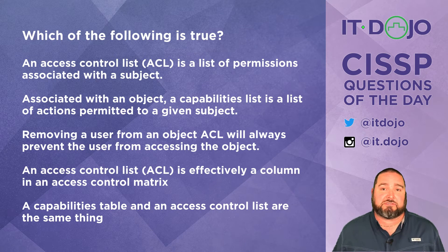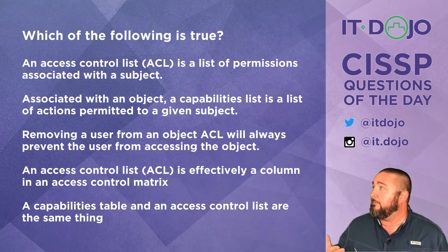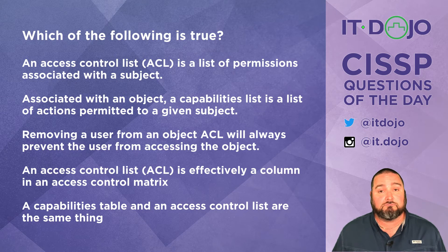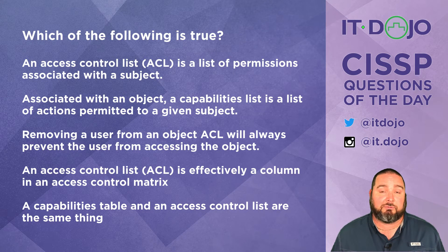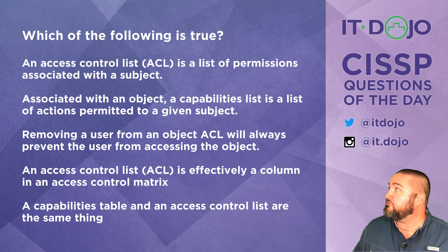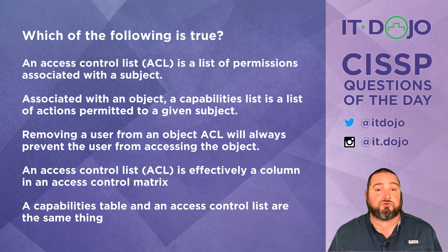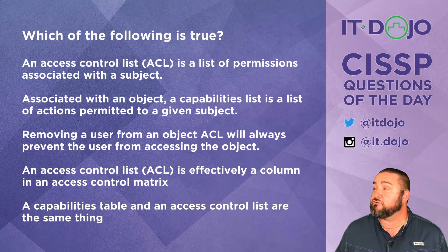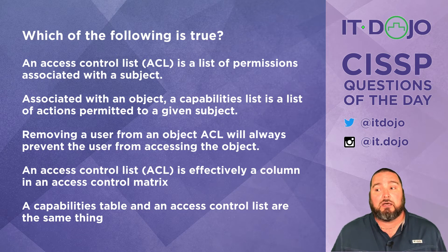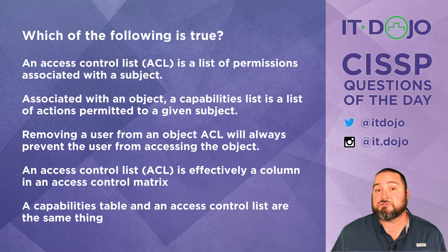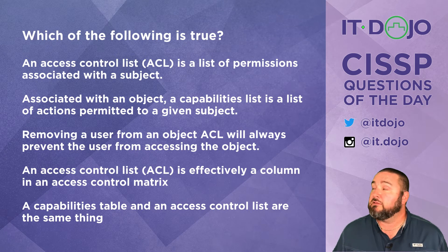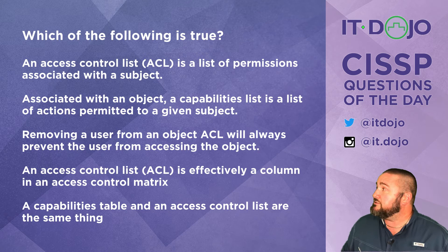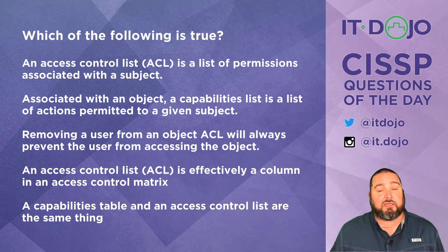Next question — simple question, but the answer choices have a lot of words. Which of those is true? Click pause, read them, let me know; click play when you're ready. First answer choice says that an access control list is a list of permissions associated with a subject. No — an access control list is a list of permissions associated with an object, so that is not true.